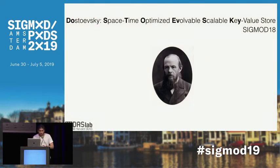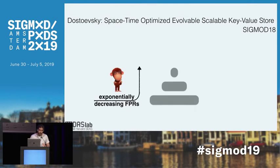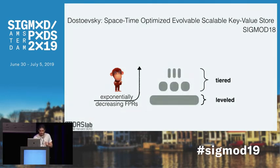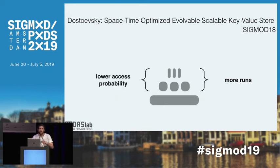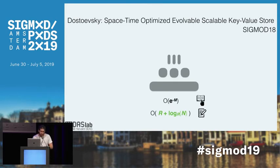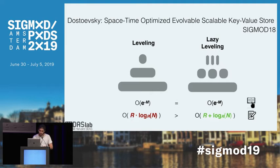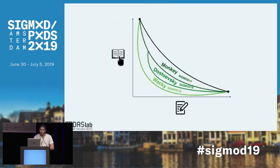Dostoevsky — Space Time Optimized Evolvable Scalable Key Value Store, from SIGMOD 2018 — exploits the exponentially decreasing false positive rates at smaller levels to perform lazy tiered merging at smaller levels and greedy leveled merging at the largest level. Lazier merging at smaller levels means more runs there, but the exponentially decreasing false positive rates compensate for the greater number of runs. We end up with the same bound for reads but a better bound for writes: r + log(n) as opposed to r × log(n). Dostoevsky thus improves on the leveling merge policy and pushes the trade-off curve further.